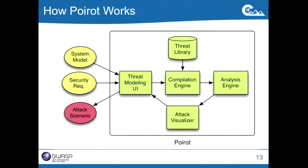Just briefly, here's the way Poro works. It accepts two different kinds of inputs: the model of the system, and the security requirement you want to check. It's going to combine those two things with the knowledge it has in its threat library, compile them into a format that can be analyzed by the backend engine. When the engine finds an attack, the scenario is translated back into a graphic representation that's displayed to the user.